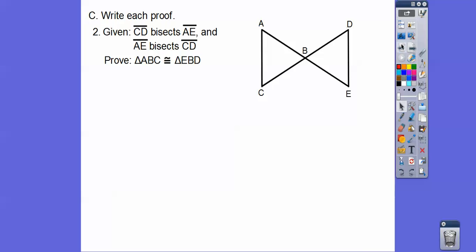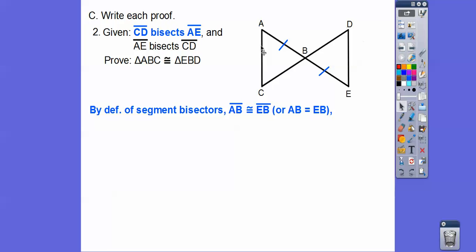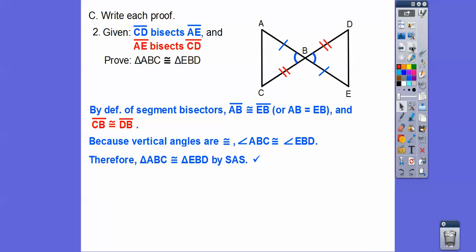Let's try this one. We get some bisectors. It says this segment bisects AE, so this piece equals this piece. And AE bisects CD, so this side equals this side. By definition of segment bisector, CD bisects AE, so AB is congruent to EB. Notice I'm going in corresponding order — first and second on each side. The other bisector gives us the other pair of congruent segments. Then the vertical angles are congruent, and we can say the triangles are congruent by Side-Angle-Side.